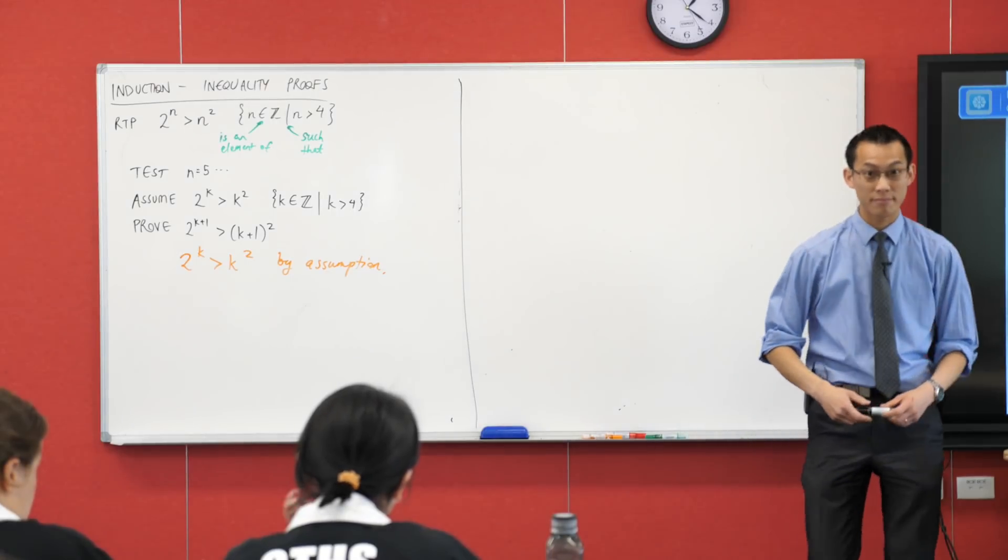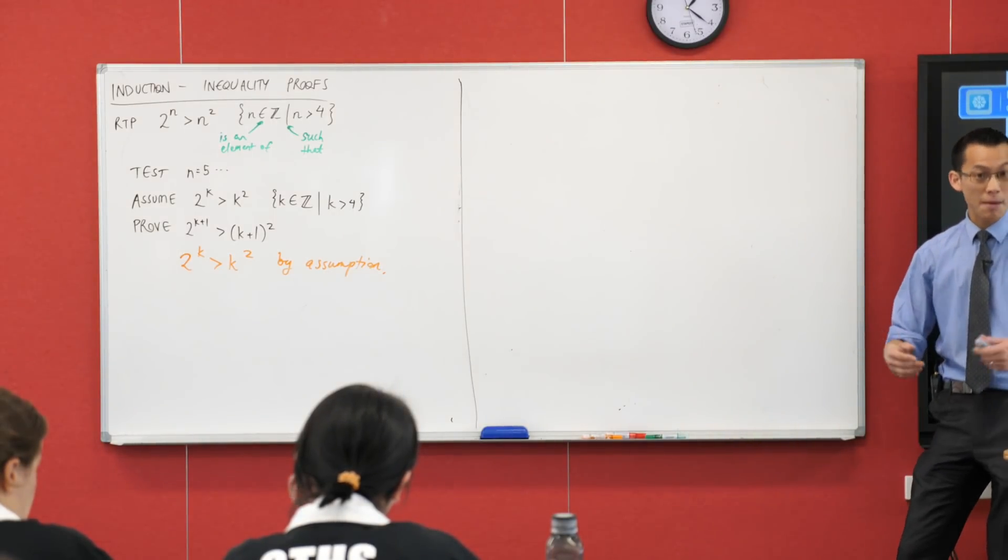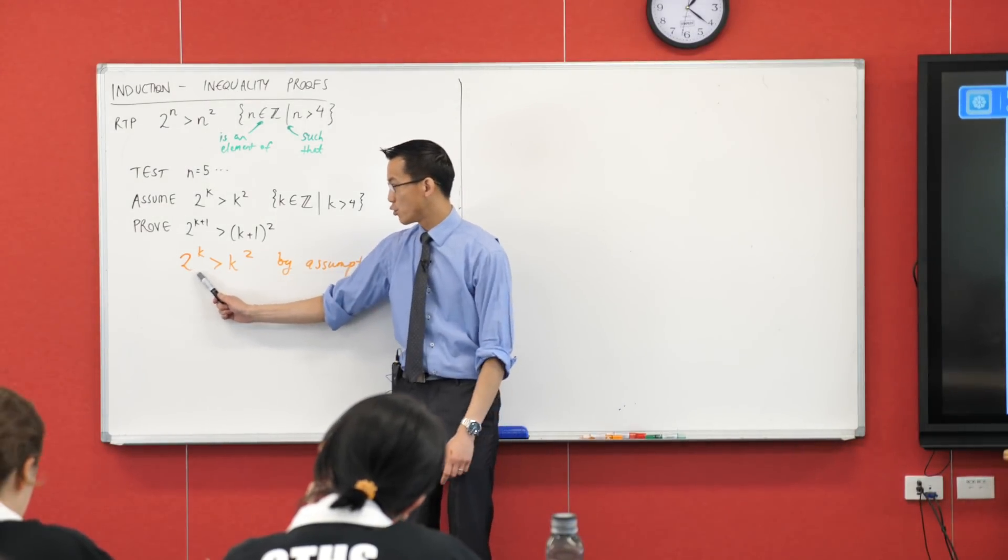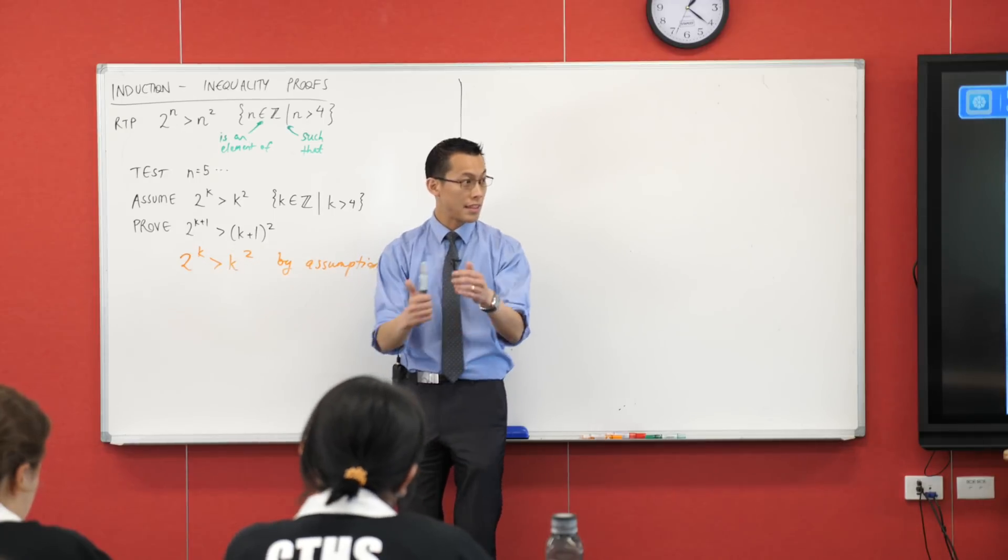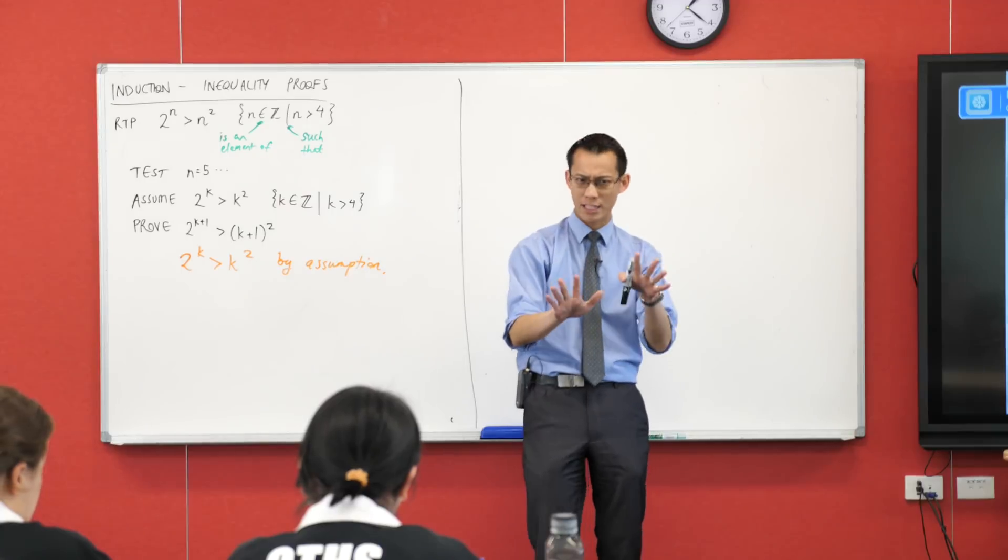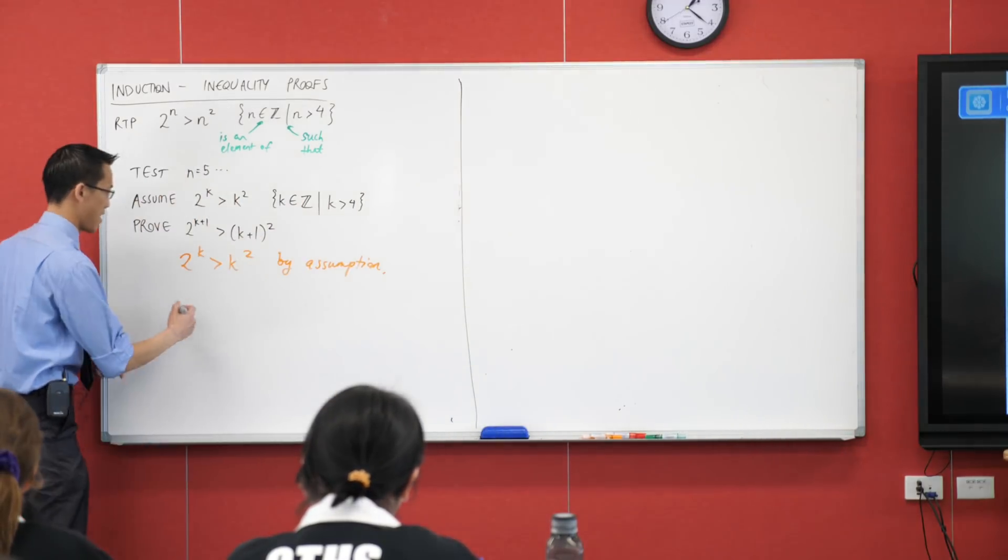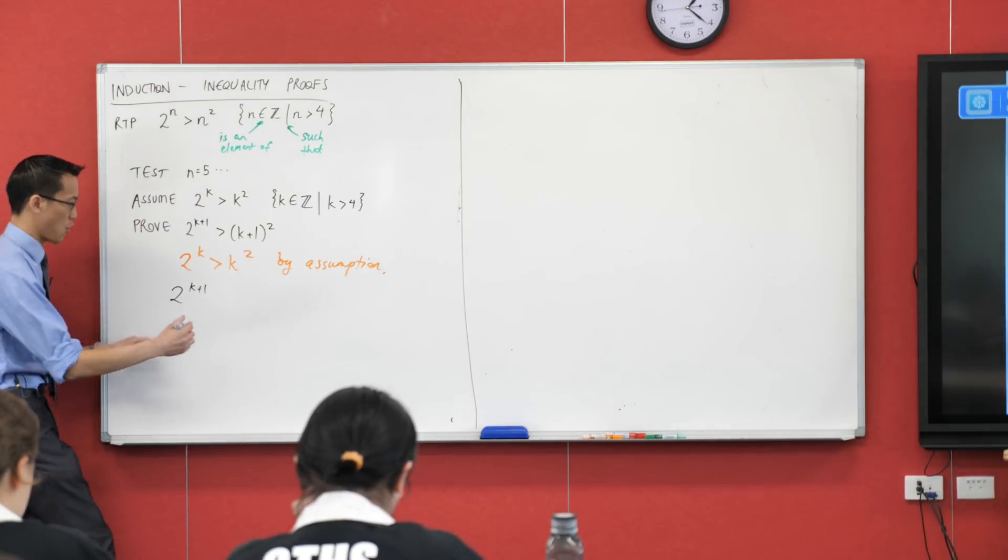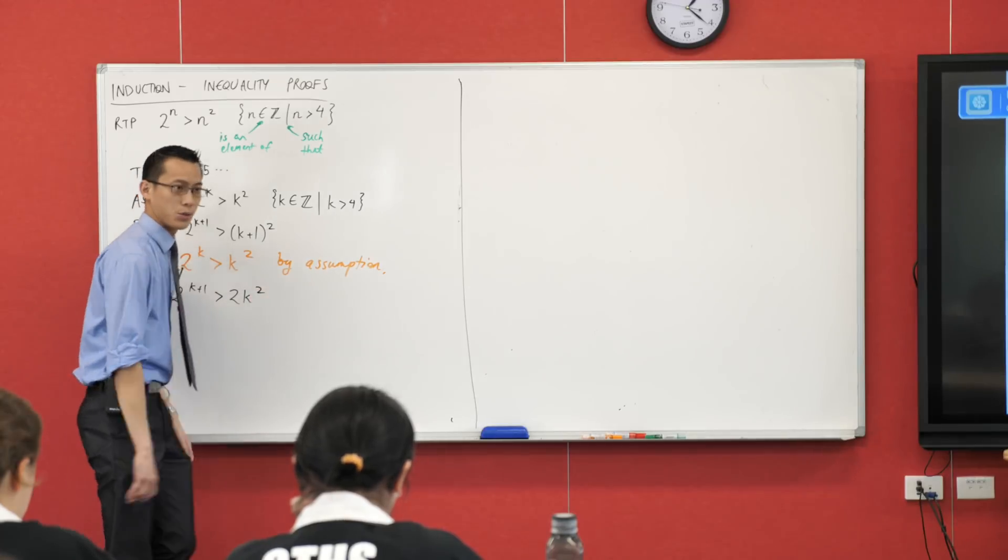What do you reckon, Daniel? Multiplying both sides by two. Multiplying both sides by two would be a great idea because from our exponent laws, we know that multiplying this by two puts that k plus one up the top. That's good. And then we've got the left hand side sort of done and I can forget about it. That's really nice. Can we go ahead and do that? I'm going to multiply the left hand side by two. So, I'm also going to multiply the right hand side by two.